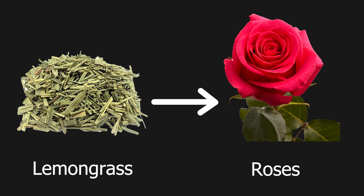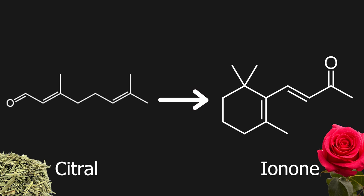In this video, I will be using lemongrass to make the smell of roses. Specifically, I will extract citral from lemongrass, which has a strong lemon smell, and turn it into ionone, which smells like roses. To do this, I will first take lemongrass and extract its essential oil through steam distillation.